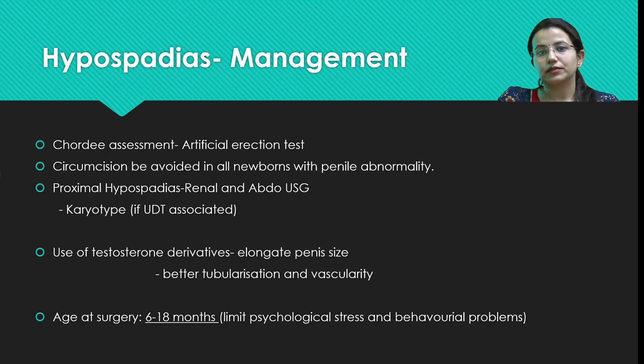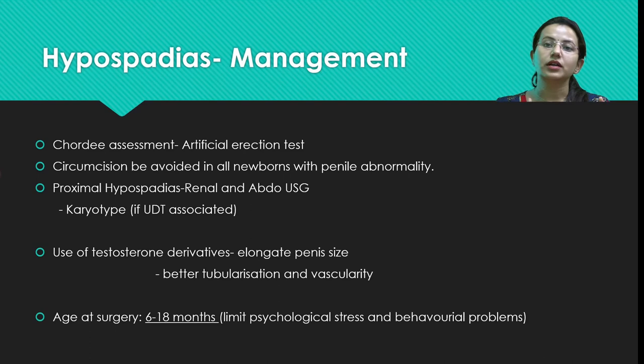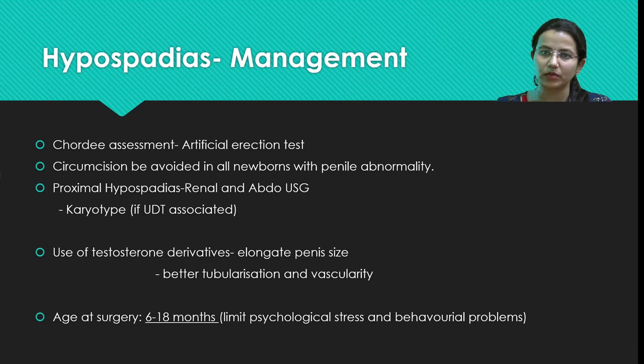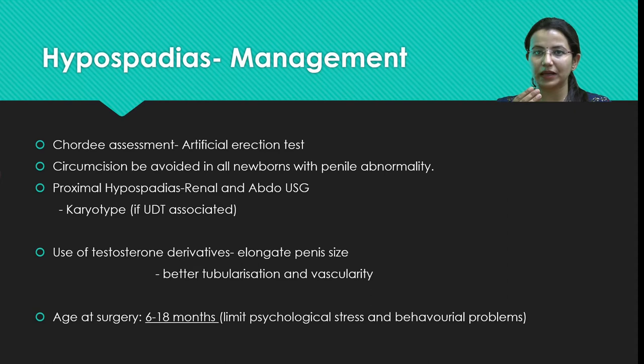Circumcision should always be avoided in all patients with penile abnormality, as the prepuce is a major tissue that can be used for reconstruction. Circumcision is common in Jewish and Muslim communities, but with awareness, parents now refuse circumcision if they see any anomaly on the penile surface or if the urethral meatus is not in the orthotopic position, and refer the child to pediatric surgeons.